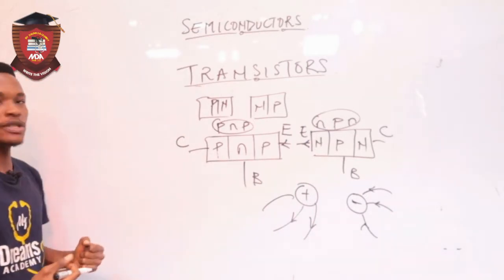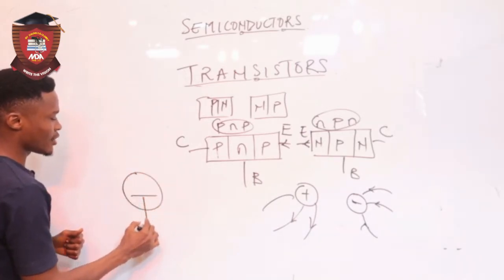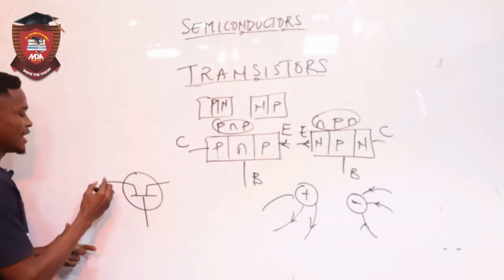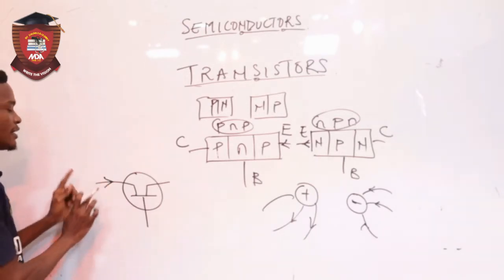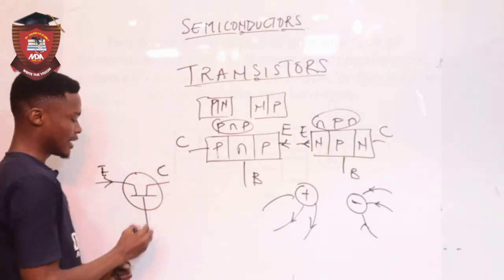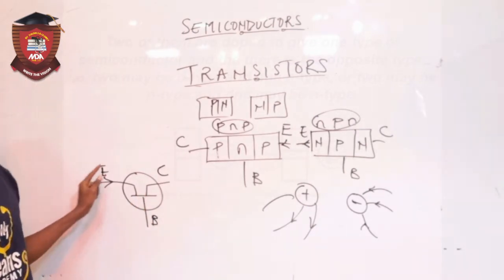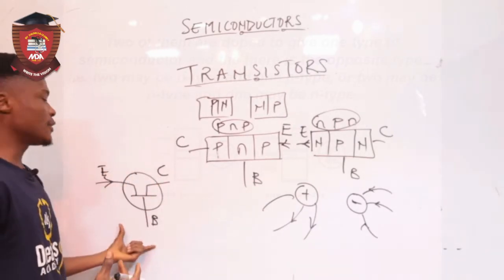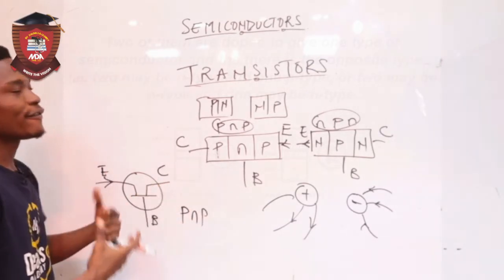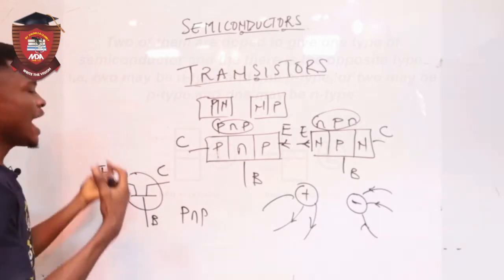In an electrical circuit, how do we identify transistors? We have a specific diagram for them. You normally see something like this — this is a transistor, with an arrow pointing a particular way. If the arrow points inwards, that side is your emitter, the other side becomes your collector, and the middle is your base, making it a PNP transistor. For an NPN transistor, we simply reverse the arrow.